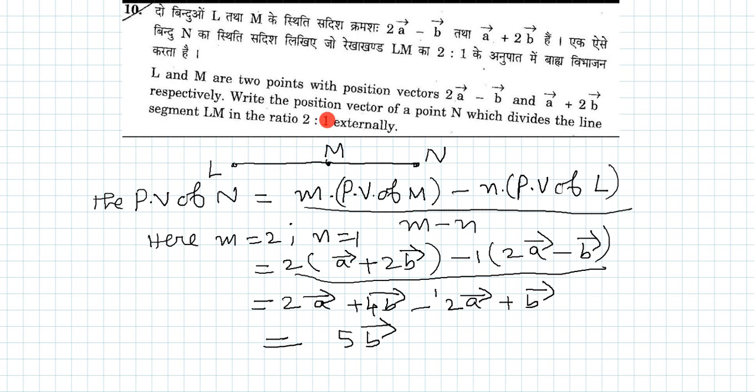2 is to 1, that is the given. So to find the position vector of N, we know the formula: the position vector of N equals m times the position vector of M minus n times the position vector...